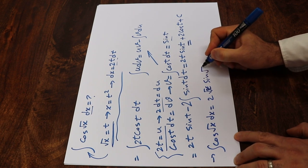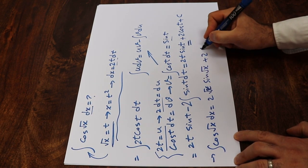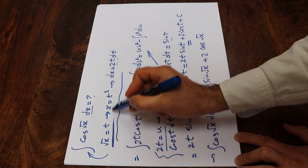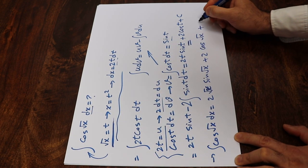instead of t, I write square root of x, times sine square root of x plus 2 cosine, instead of t, I write square root of x, because here t is defined as square root of x, plus c.